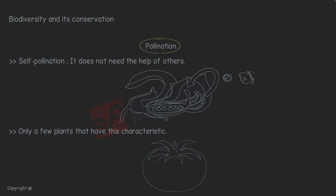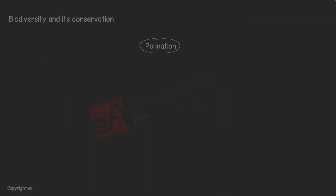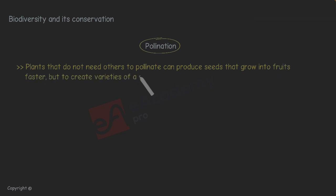Certain food plants like tomatoes belong to this category. Plants that do not need others to pollinate can produce seeds that grow into fruits faster, but to create varieties of a single type of fruit needs human intervention.